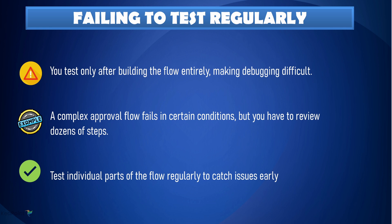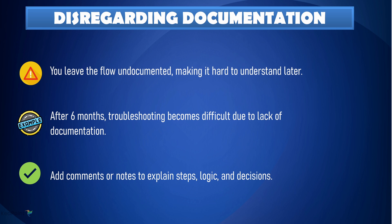Ninth: always test regularly. Don't wait until the flow is fully built to test it — if you only test once it's done, debugging can be a nightmare. For example, if you are building a flow for an approval process, test the approval steps on their own before adding more actions like sending notifications. Regular testing helps you catch issues early and ensure everything works as expected.